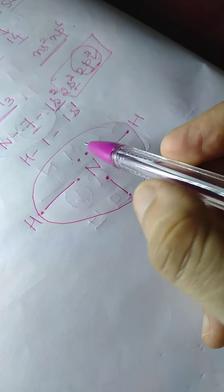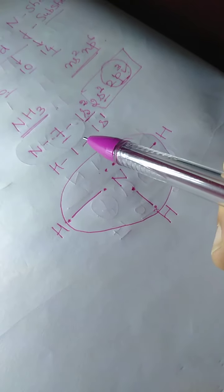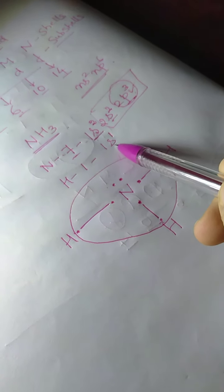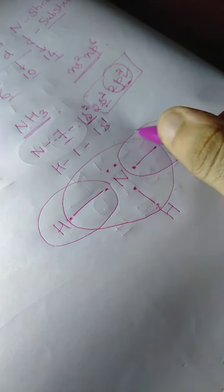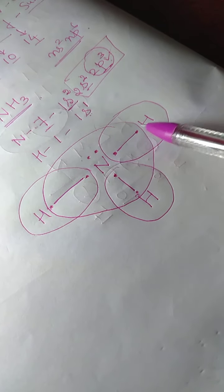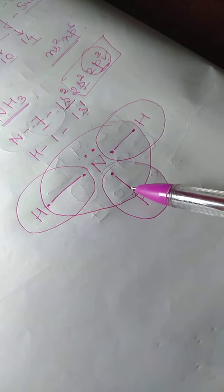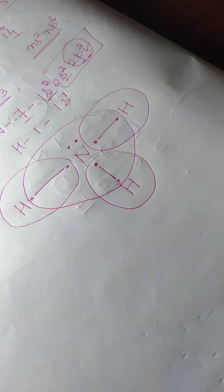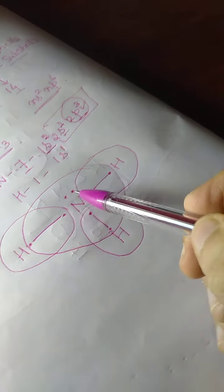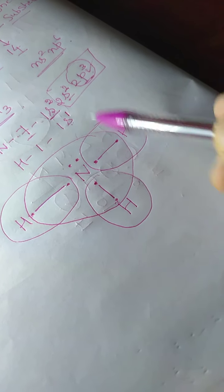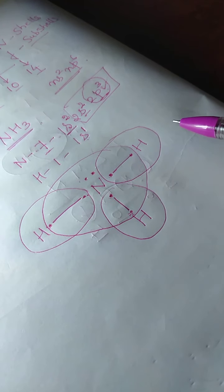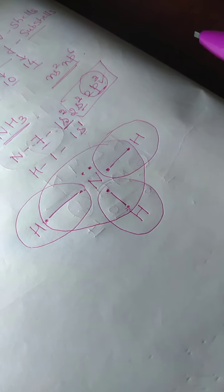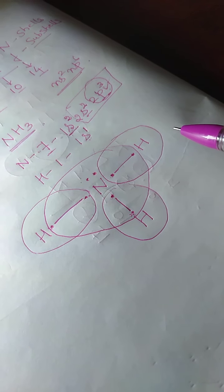Hydrogen requires 2 electrons to attain stability. Nitrogen requires 3 more electrons to attain stability, as the outermost shell of nitrogen has 5 electrons. So it requires 3 more electrons, and 5 plus 3 equals 8, which satisfies the octet configuration.